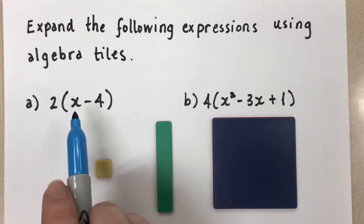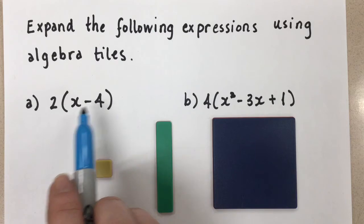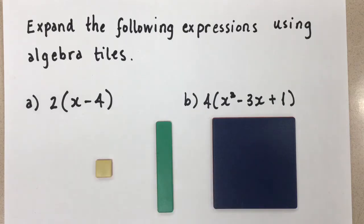So in this case, the 2 will be multiplied with the x and with the minus 4. We need to make sure we keep multiplying everything by 2.